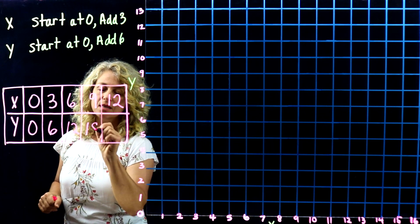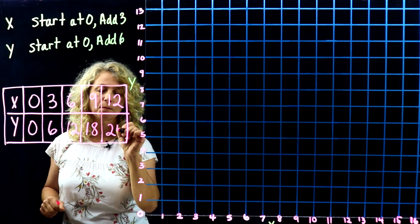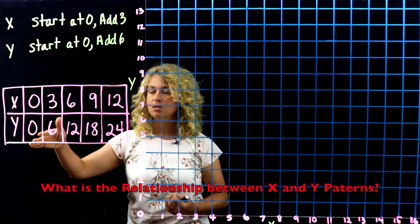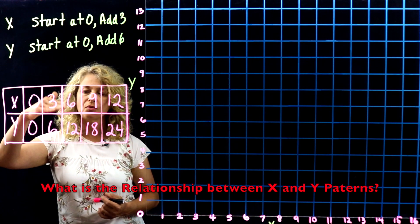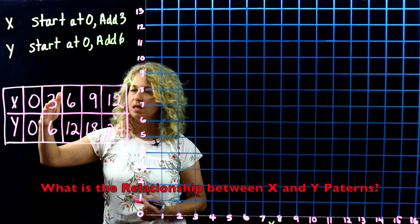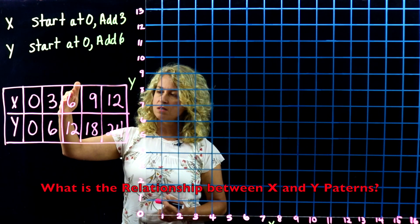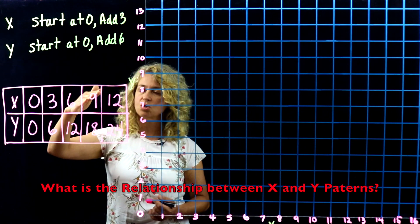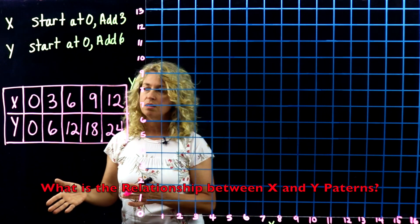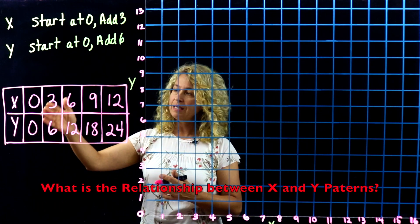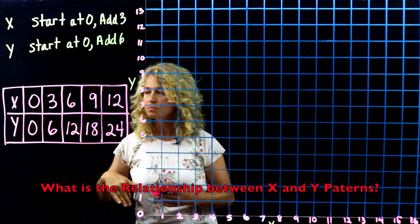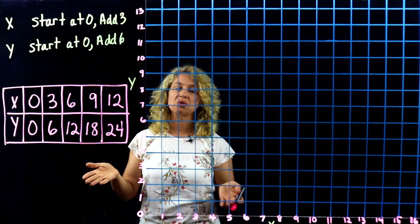To answer the question — what is the relationship between X and Y? Take 3 and 6: 6 is twice 3. 12 is twice 6. 18 is twice 9. 24 is twice 12. So Y is twice the amount of X.